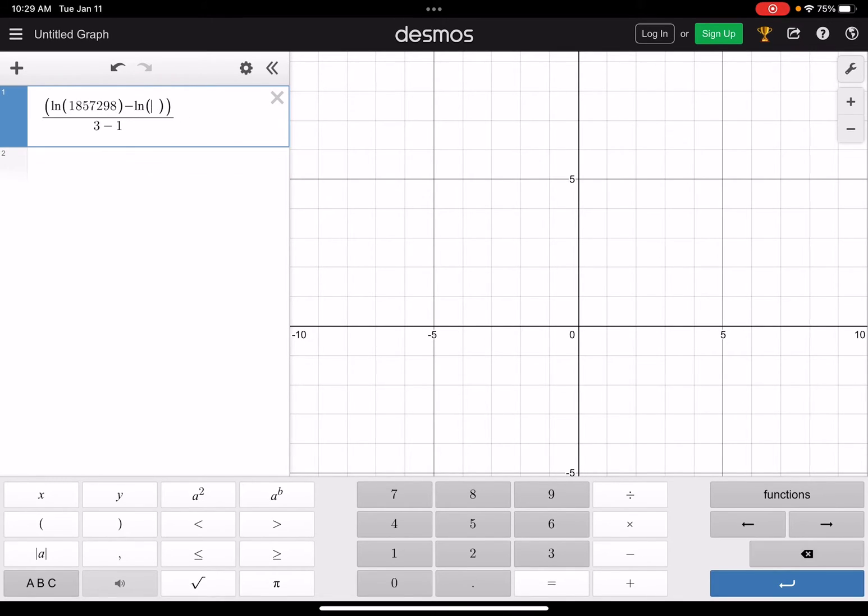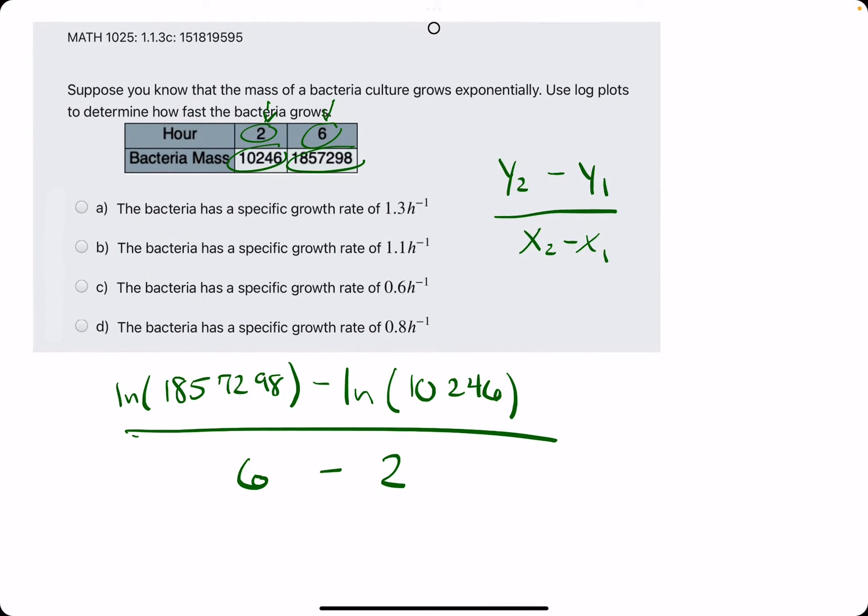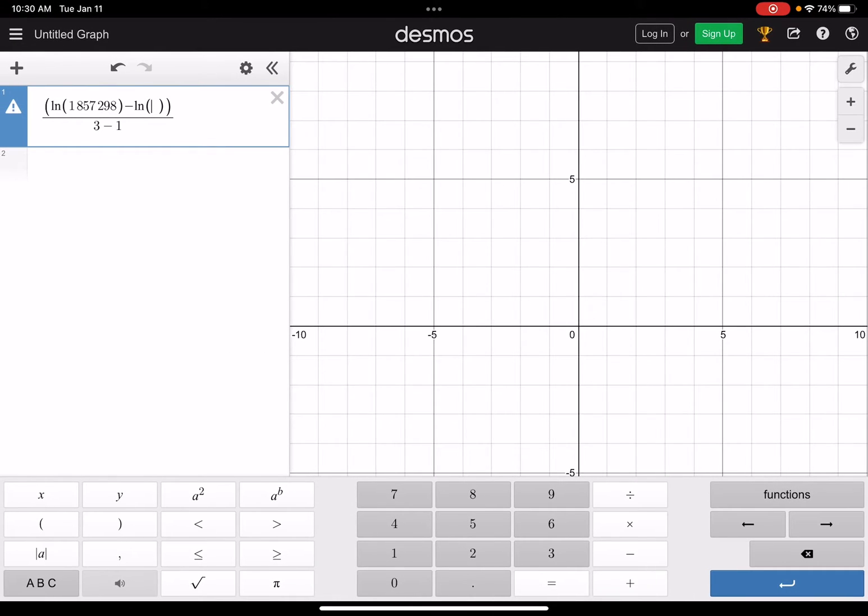And in here, we will instead type 10246. And on the bottom, we have a 6 minus 2.